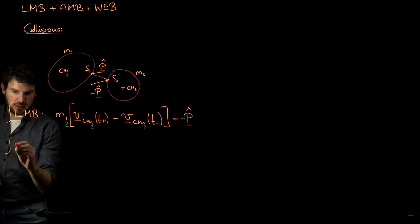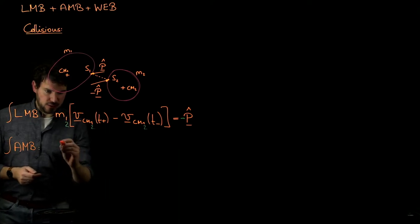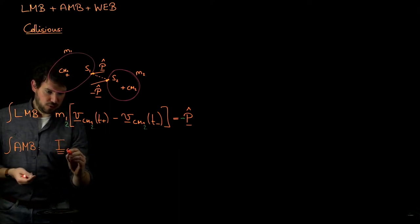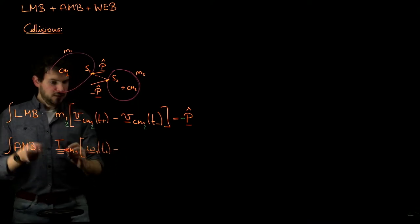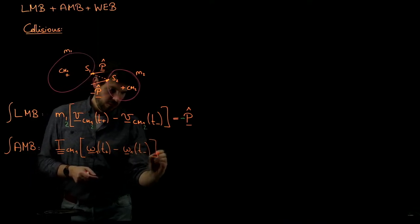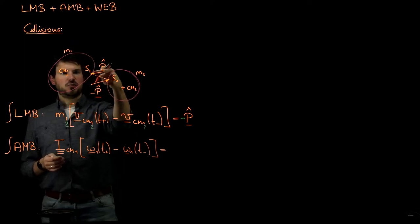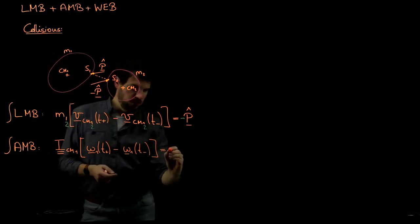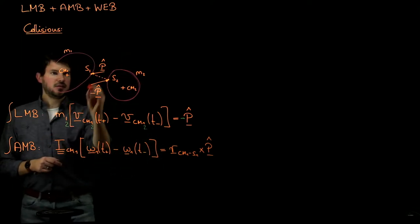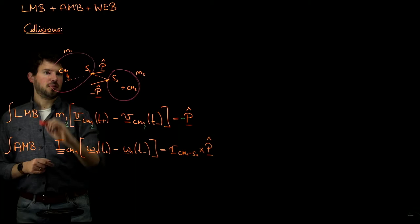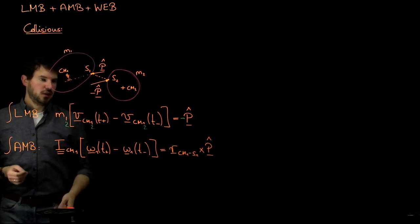In addition — and this is new because for particles it made no sense — for rigid bodies we also have a change in angular momentum. This change in angular momentum can be written as: the moment of inertia with respect to the center of mass of body 1, ICM1, times the angular velocity of body 1 after, minus ICM1 times omega 1 before the collision. This must equal the impulsive torque being applied. The torque of force P̂ on body 1 is nothing else but the lever arm cross force — the vector going from the center of mass of body 1 to point S1, crossed with P̂. So r cross P̂ is the net torque applied by the impulsive force, which results in a change in angular momentum of body 1.